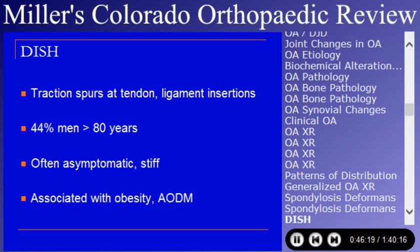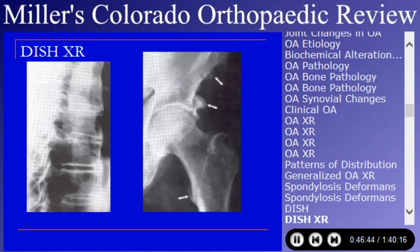Diffuse idiopathic skeletal hyperostosis (DISH) is a bony proliferation at tendon and ligament insertions. It is very common in old men who often don't hurt much but complain of significant stiffness, especially spinal. It's associated with obesity and adult-onset diabetes mellitus. The spines can become very stiff. Generally it is not a surgical entity.